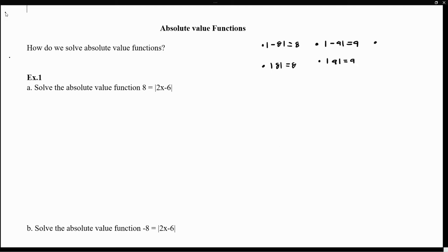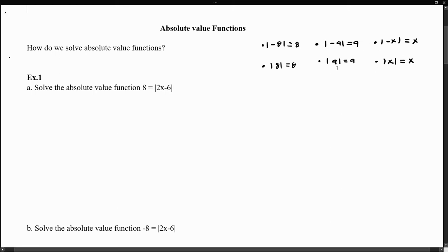The same idea can be expressed with variables. The absolute value of negative x is just positive x, and the absolute value of x equals x. Recall that when we're using the absolute value, the output is always positive. In addition to that, there are two possible expressions we could place inside the absolute value to give us the same result.